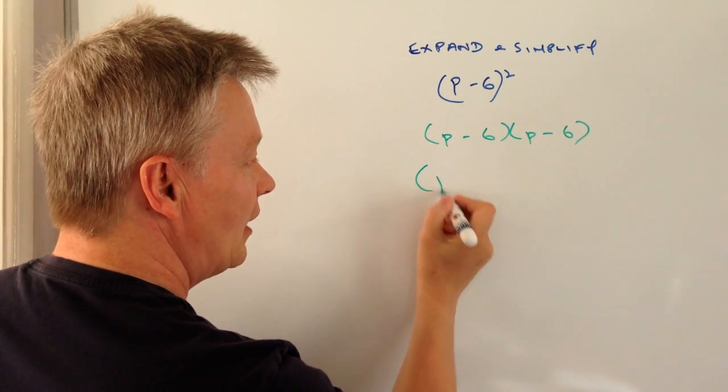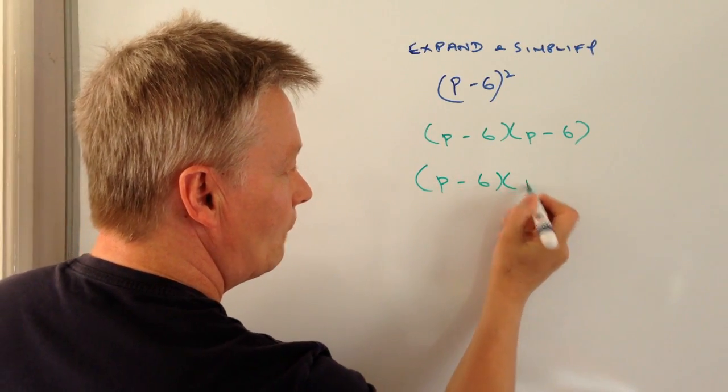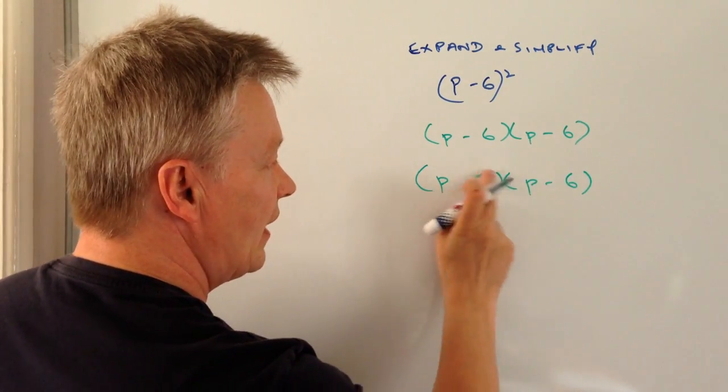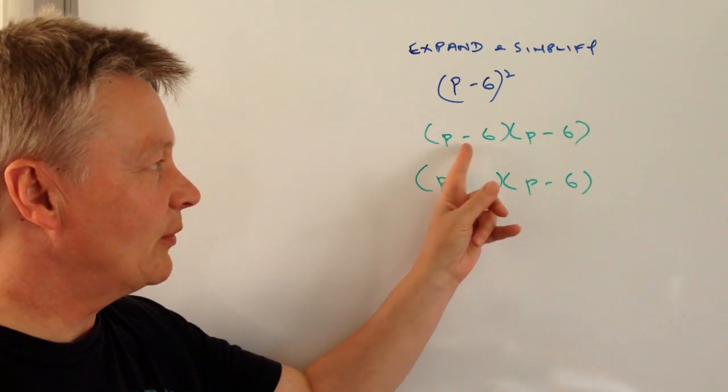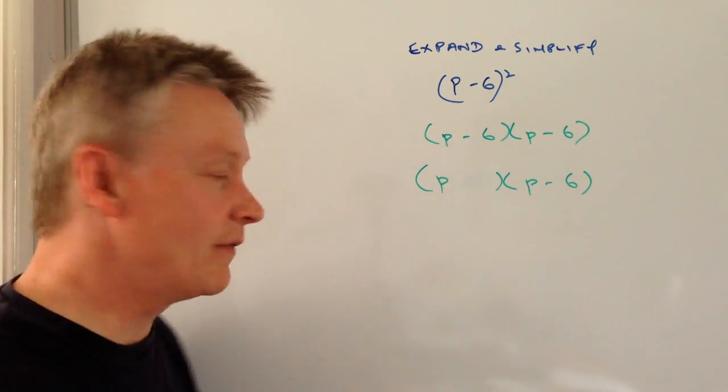So I'm going to look initially at if I have this. So I'm just going to look initially at multiply through by p. So I'm going to ignore the minus 6 part of it.